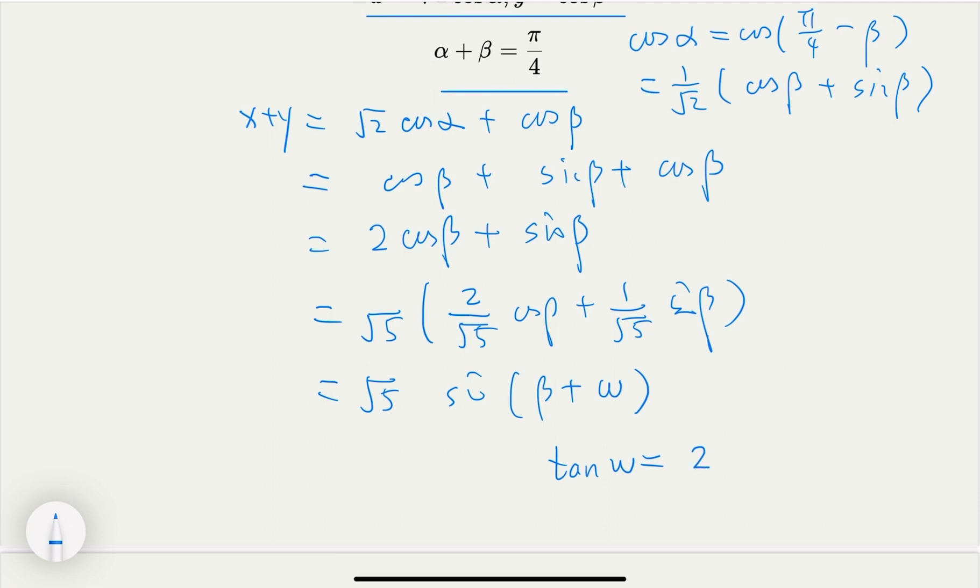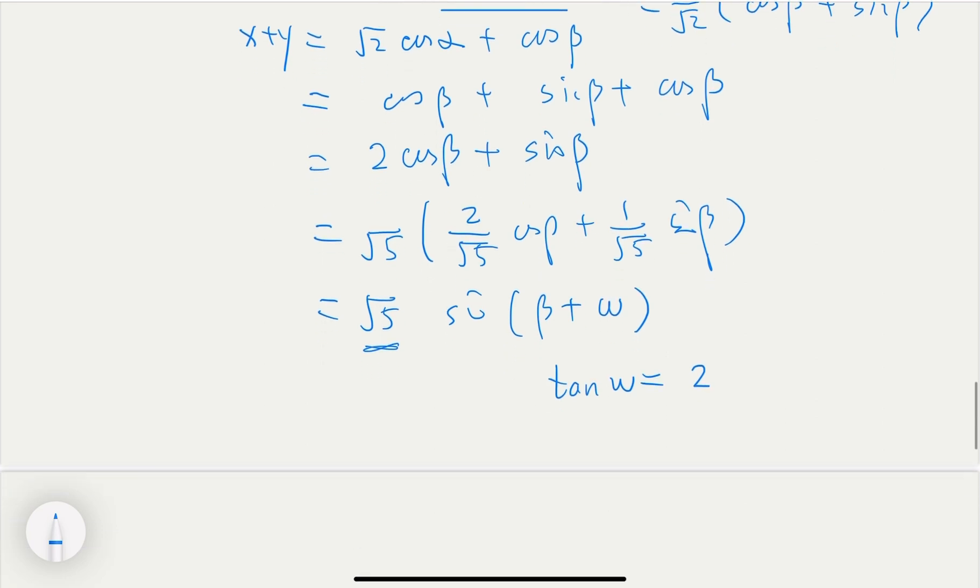So, the maximum value, of course, we find it is square root of 5 when beta equals, so x plus y equals square root of 5 when beta equals pi over 2 minus omega, where omega equals this.